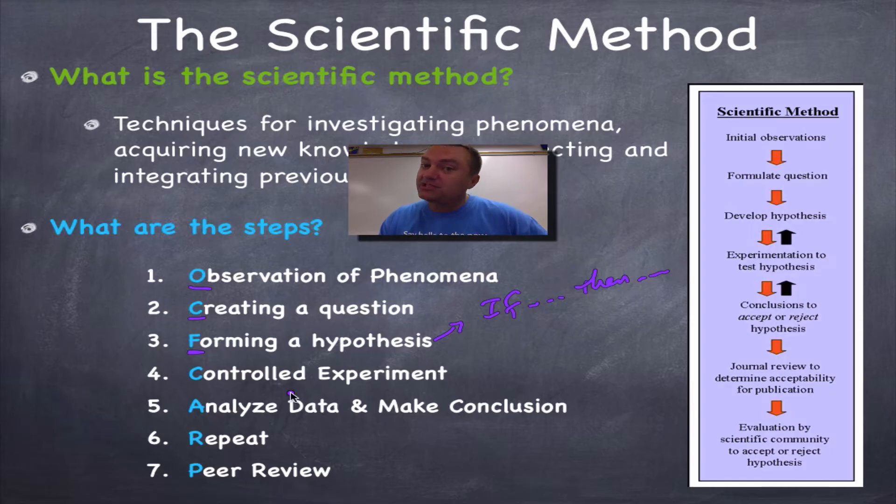Now to find out if your hypothesis is correct or not, you're going to run a controlled experiment. So that's the C in carp. When you do a controlled experiment, you're going to create data. So the A is going to be analyze that data, and you're going to make a conclusion to see if your hypothesis is correct or not. The R is going to be repeat, because you want to make sure that your results and your data is consistent. And then finally, peer review, where you let other scientists double check your work. So remember, OC the funny carp.